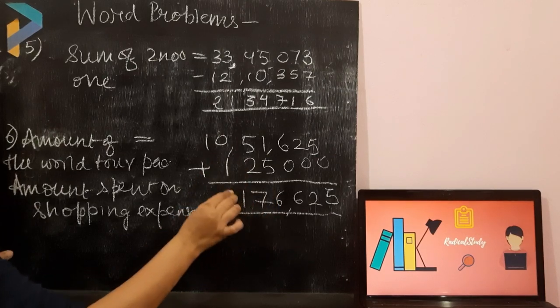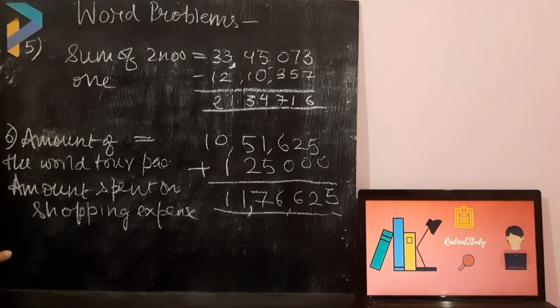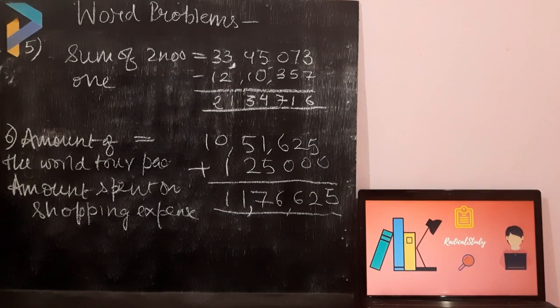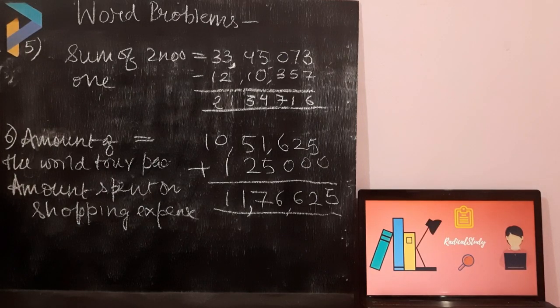0 plus 1, 1, 1 plus 0, 1. So, the total amount of his tour package is 11,76,625.